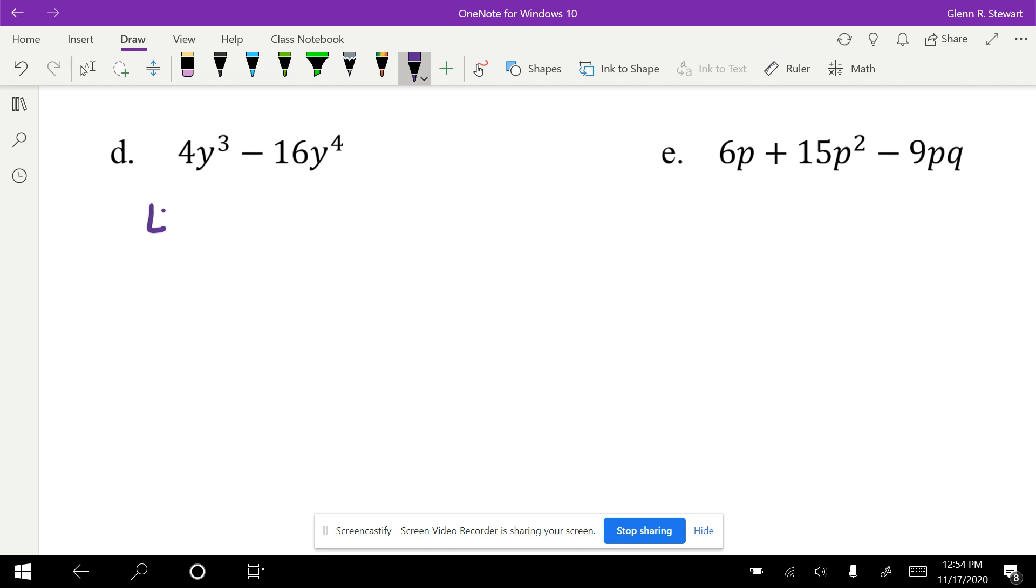So really this is 4yyy minus 4 times 4yyyy. Look at what they have in common. They each have a 4, they each have three y's, so that'll go on the outside.